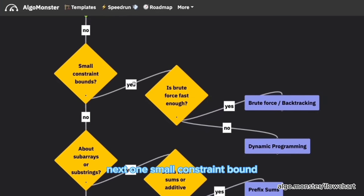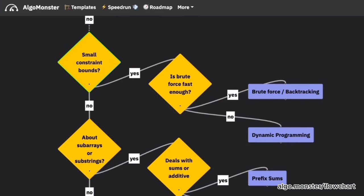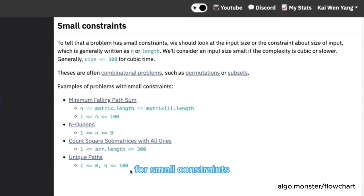Right. Awesome. And moving forward. Next one, small constraint bound. What does this mean? For small constraints or bounds here to get a problem in this category, we want to go to the bottom of a problem statement and look for the constraints. For example, in this problem, here are the constraints and usually we want to look at the length of the array or the integer n for most cases.